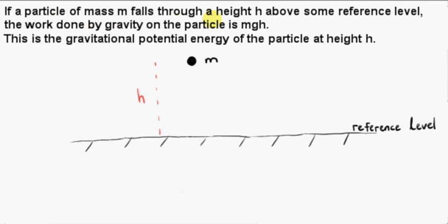If a particle of mass m falls through a height h above some reference level, the work done by gravity on the particle is mgh. This is the gravitational potential energy of the particle at height h.